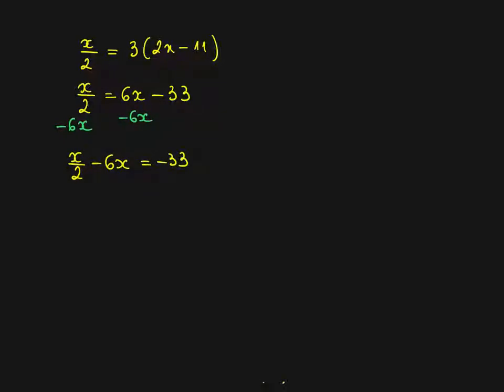Now again this could be a bit challenging but if we think that that's a half x minus 6x and if you put in your calculator a half minus 6 to see how many x's you have, your calculator will give you minus 11 over 2. So the left hand side is minus 11 over 2x equals minus 33.